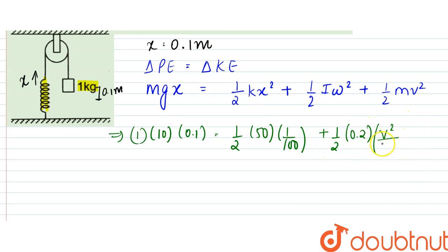So it would be v square by r square, that is 0.2 square, plus half m, that is 1, into v square. So from here...